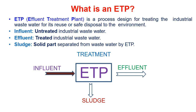Let us first understand what is ETP — the effluent treatment plant. It is a process designed for treating industrial wastewater for its reuse or safe disposal to the environment, because there are separate rules and regulations against the discharge of polluting water into the common sewage. Though commonly we call it effluent, in a more technical sense the incoming dirty water is called influent.